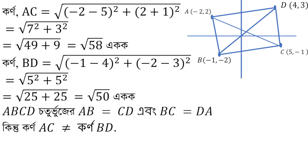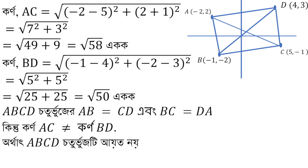The opposite sides are equal but the angles are unequal, so this is not a valid rectangle. If opposite sides are equal but angles are unequal, it forms a parallelogram. Since opposite sides are equal but angles are unequal, this is a parallelogram, not a rectangle.